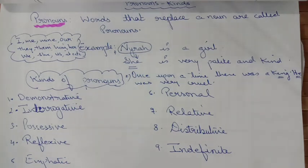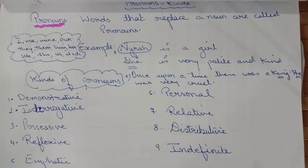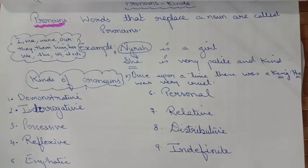Now let's come to the kinds of pronouns. All total we have nine kinds of pronouns. The first one is demonstrative, then interrogative, possessive, reflexive, emphatic, personal, relative, distributive, and indefinite. So we have all total nine kinds of pronouns and we will study them one by one.